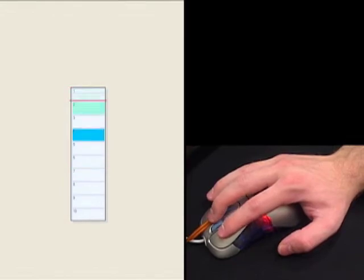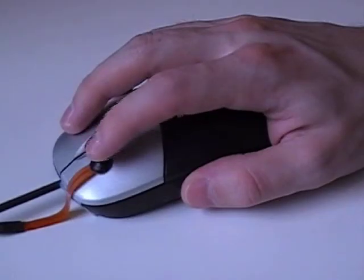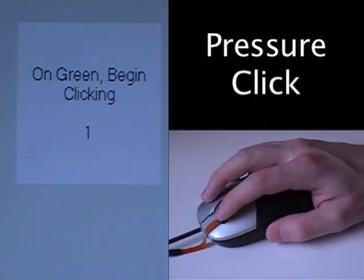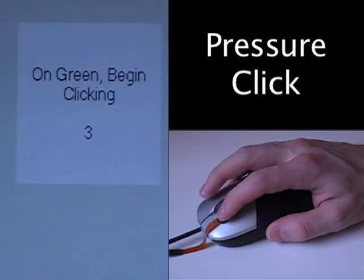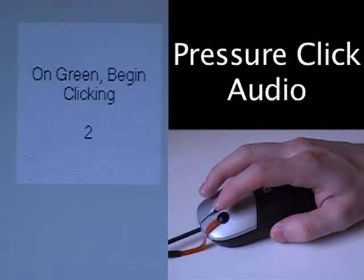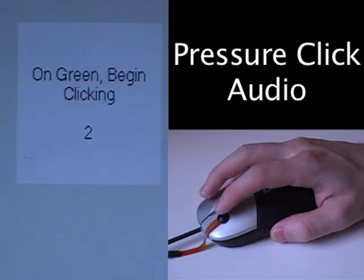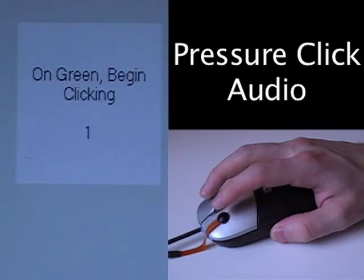Research has shown a wide range of rich interactions possible with pressure sensors, but can pressure sensors do the work of a mouse button? To answer this question, we first developed four different implementations of a pressure sensor button, or P button. Pressure click mode is designed to be as similar to a mouse button as possible — applying a certain amount of pressure generates a mouse down, while releasing generates a mouse up. However, pressure click is missing the tactile feedback and audible click of a real button, so we create pressure click audio mode, which plays clicking sounds on mouse down and mouse up.